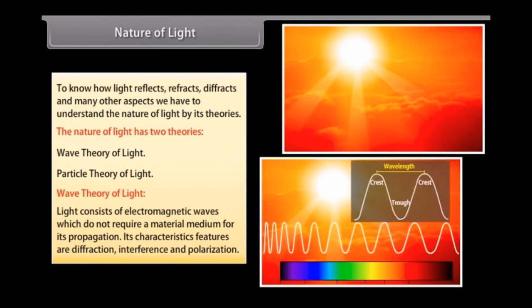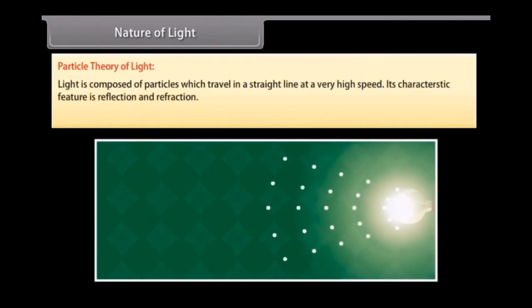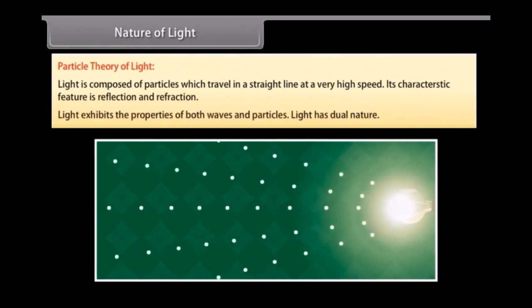Particle theory of light: light is composed of particles which travel in a straight line at a very high speed. Its characteristic features are reflection and refraction. Light exhibits the properties of both waves and particles. Light has dual nature.